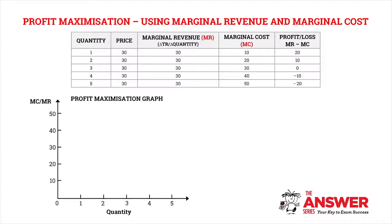So let's analyze our table. At quantity 1, our marginal revenue is 30 rand, our marginal cost is 10 rand, and that means that we've earned a profit of 20 rand. At quantity 2, our marginal revenue is 30 rand, our marginal cost is 20 rand, and that means that we've earned a profit of 10 rand.